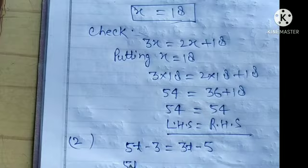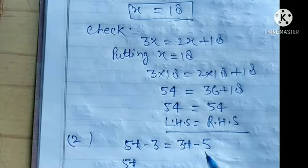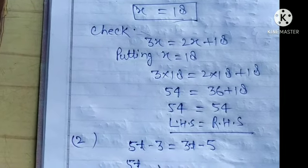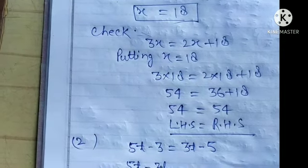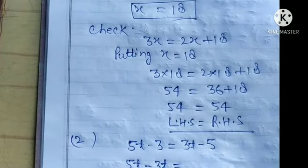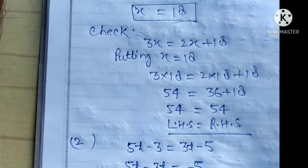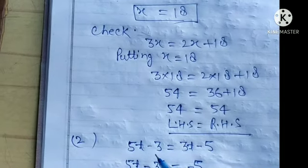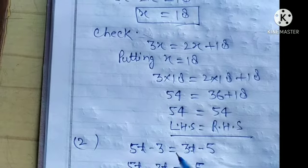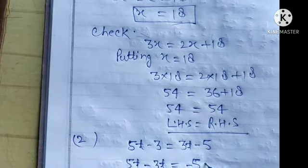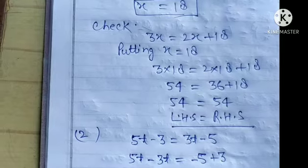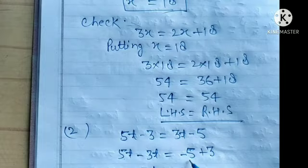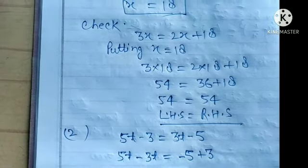5t is on the LHS and 3t minus 5 is on the RHS. Transposing 3t to LHS, you get minus 3t. And minus 3 on the LHS is transposed to RHS, giving plus 3. This means 5t minus 3t, that is 2t, is equal to minus 5 plus 3, which gives minus 2.